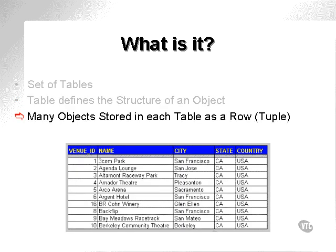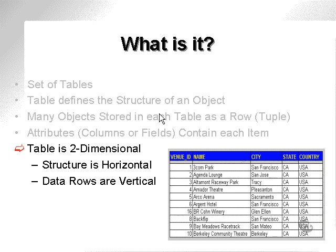Many objects can be stored in each table as rows or tuples. We can see that the columns, or fields, declared as venue ID, name, city, state, and country, are duplicated, as shown by the ten rows displayed on the screen. These are ten venues in the Northern California area. The table is two-dimensional in structure: the structure of each row is declared horizontally, and the data rows are inserted into that structure and duplicated vertically.